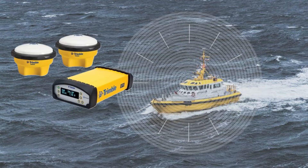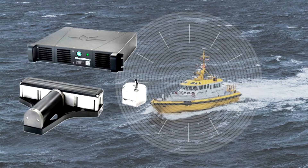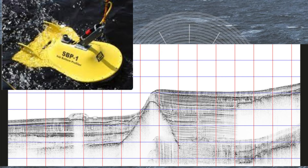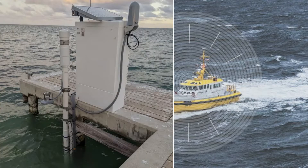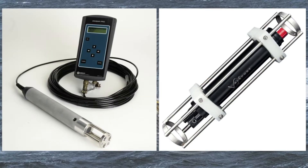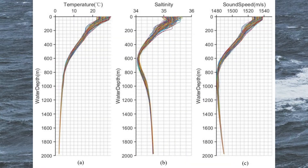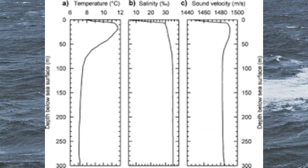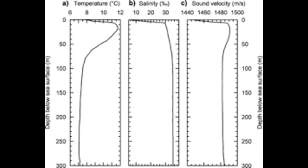We use GNSS devices for position, echo-sounders for depth, side-scan sonars for seabed imagery, and low-frequency sub-bottom profilers for soil strata below the seabed. We also use tide gauges and current meters to measure tides and ocean currents. Sound velocity and CTD sensors measure conductivity, temperature, density, salinity, and pressure at different depths in the water column, allowing us to determine the sound velocity profile. There are many different pieces of equipment used in hydrographic surveying, which we will discuss in detail in upcoming videos.